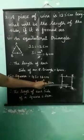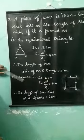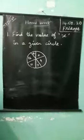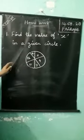3 cm, 3 cm, 3 cm, 3 cm. All sides are equal. Okay. Understood? Students, I give homework for you. Find the value of x in a given circle.